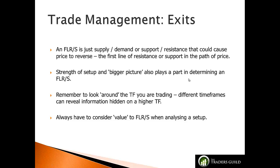Looking at exits: FLR/FLS — First Line of Resistance, First Line of Support — is simply a supply/demand or support/resistance zone that could cause price to reverse. I'm not going to talk about running trades beyond the FLR/FLS here; this is purely about how to identify the FLR/FLS and use it as an exit. When identifying the FLR/FLS we also want value in the trade — for me that means a risk-reward of around 1R. I will take trades less than that; my bare minimum is around 0.5R, but most of my trades are between 0.7R and 1.3R to the FLR/FLS.